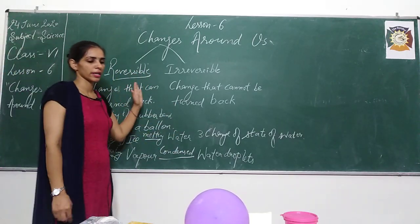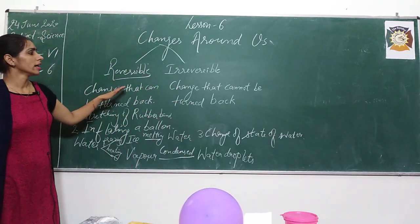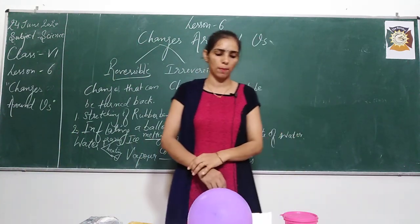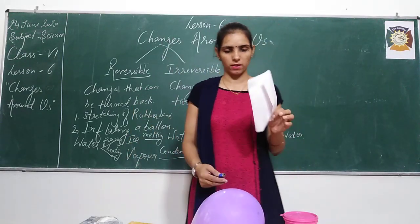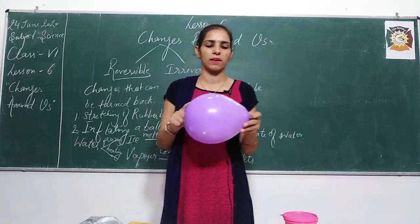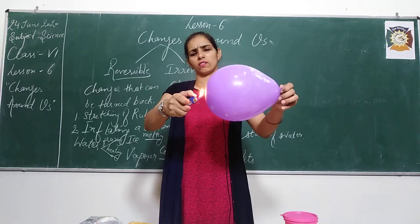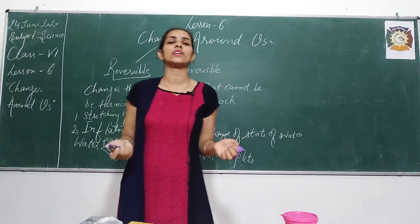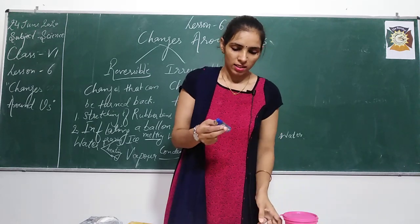So you are having various changes that can be turned back into their original shape. Now there are some other changes which cannot be turned back. What are those examples? Suppose I am having this balloon. When I burst the balloon — it gets burst, it gets exploded with the help of the slider. I have just exploded the balloon.